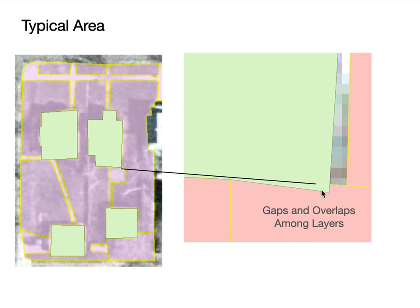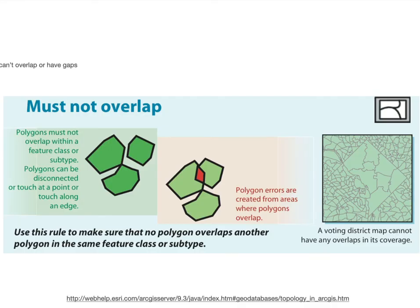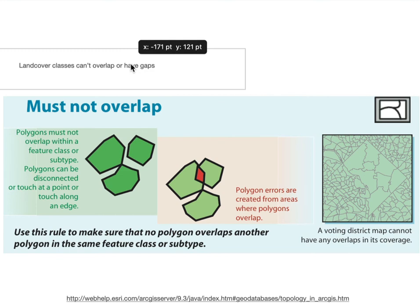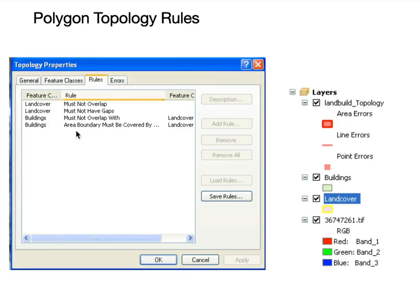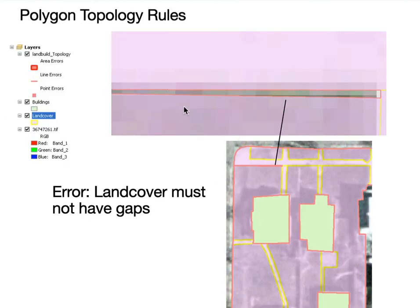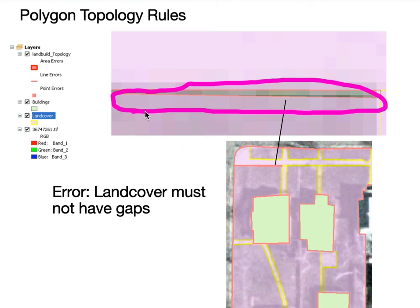Here are gaps and overlaps among layers. We have a building layer and a land cover layer behind it — there's a gap and an overlap with the building layer. The test utility identifies and flags those, and we'd have to go back and fix them. Typically, you build the topology rules, apply them, and get a visual flagging of the gaps and overlaps. Often you'll get a list of those errors — it shows up graphically and gives you a list so you can zoom to each error to find and fix it.